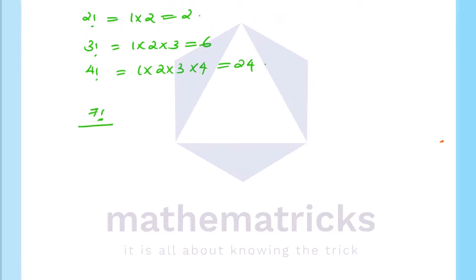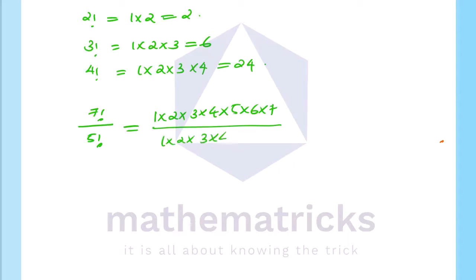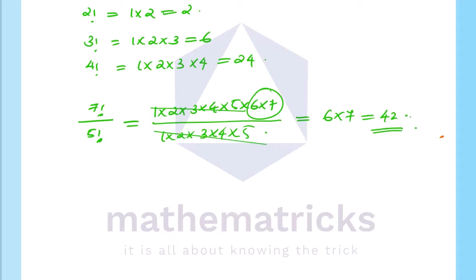Next, let's compute 7 factorial divided by 5 factorial. Seven factorial is 1 × 2 × 3 × 4 × 5 × 6 × 7. Dividing by 5 factorial, the 1 through 5 terms cancel, leaving 6 × 7, which equals 42.